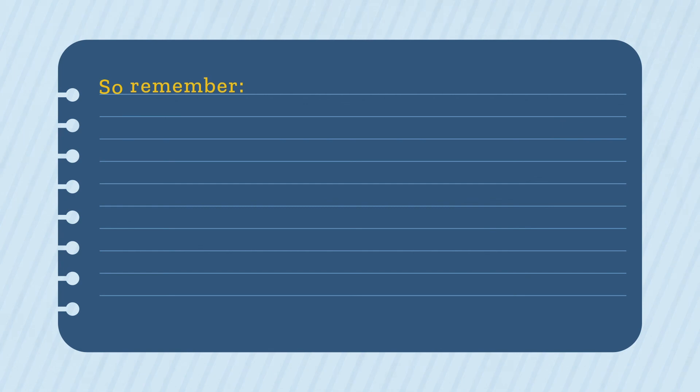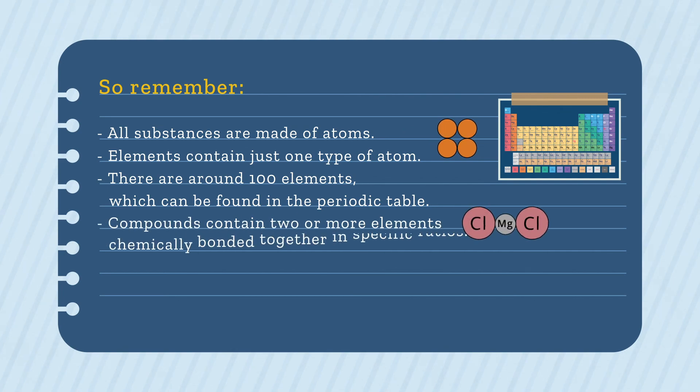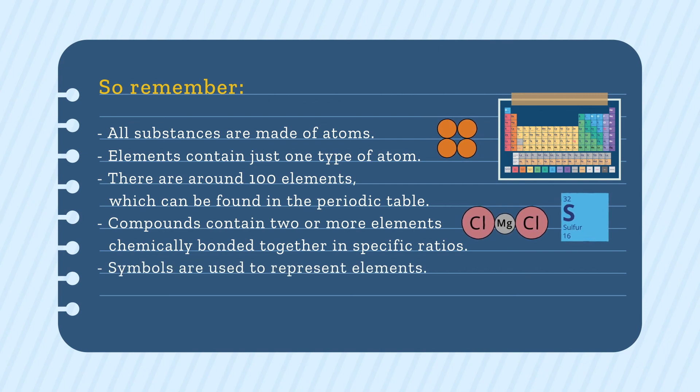So remember, all substances are made of atoms. Elements contain just one type of atom. There are around 100 elements. Compounds contain two or more elements chemically bonded together in specific ratios. Symbols are used to represent elements. Chemical formulae are used to represent compounds.